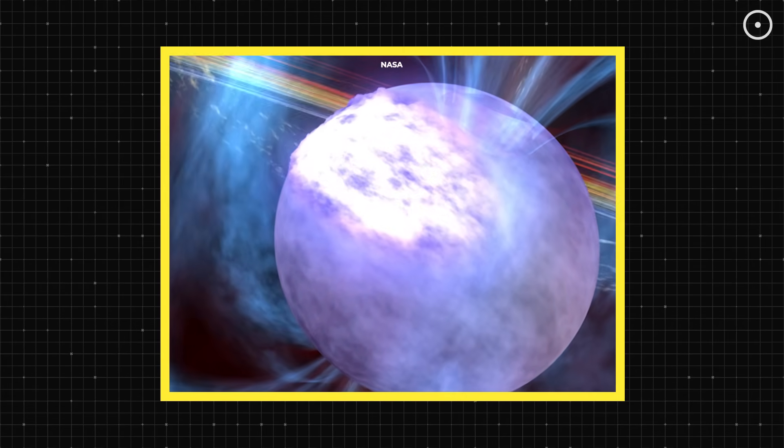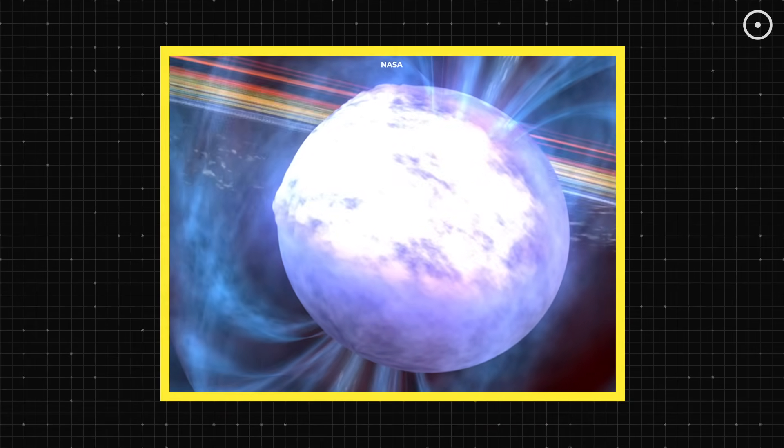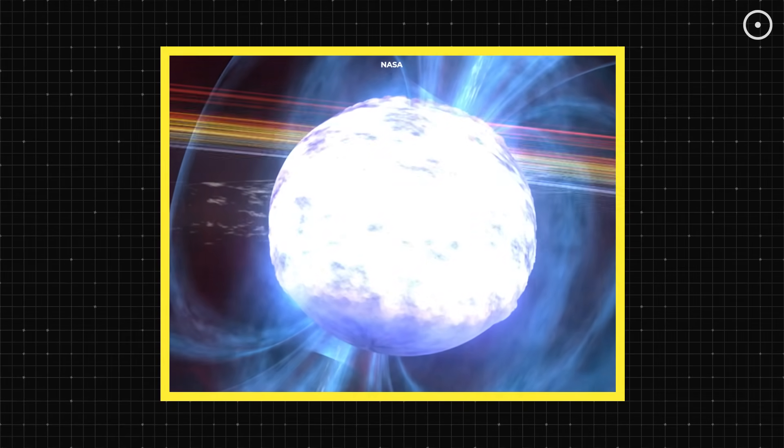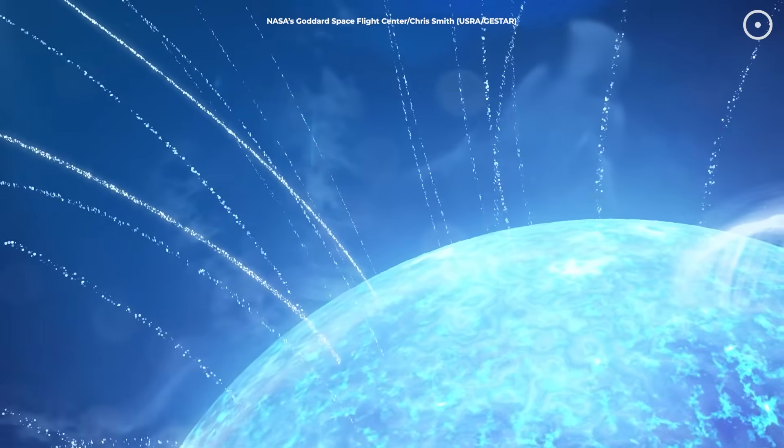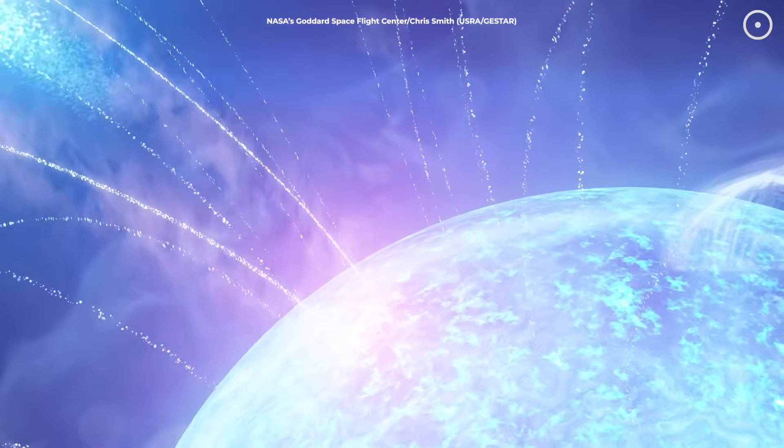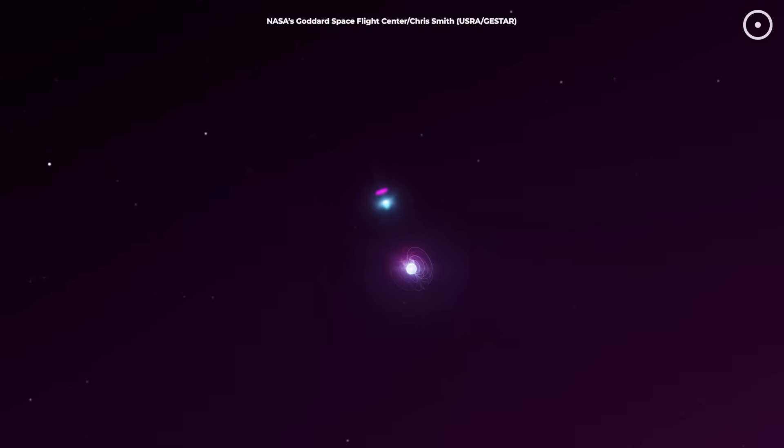The crust of this neutron star, which is harder than diamond, literally cracked and shifted by just a few millimeters. That tiny crack released more energy in one-tenth of a second than our sun will produce in the next 150,000 years.